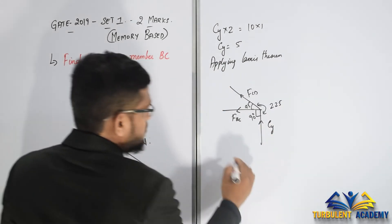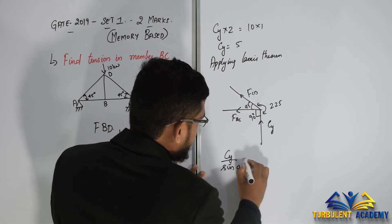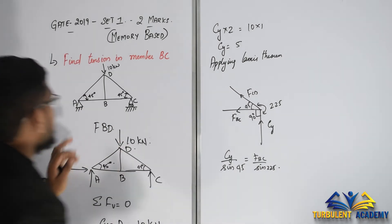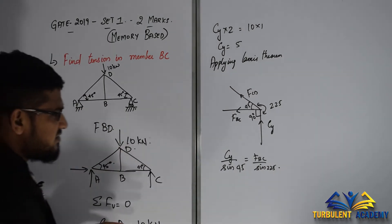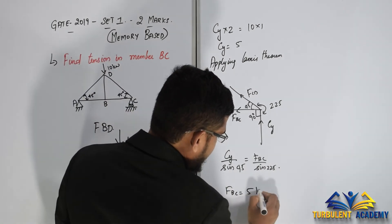C_Y divided by sine 45 equal to F_BC divided by sine 225. Since they have asked for the magnitude or tension, so F_BC is going to be 5 kilonewtons.